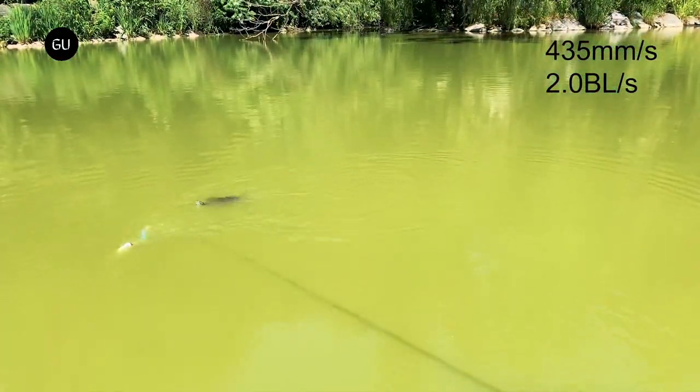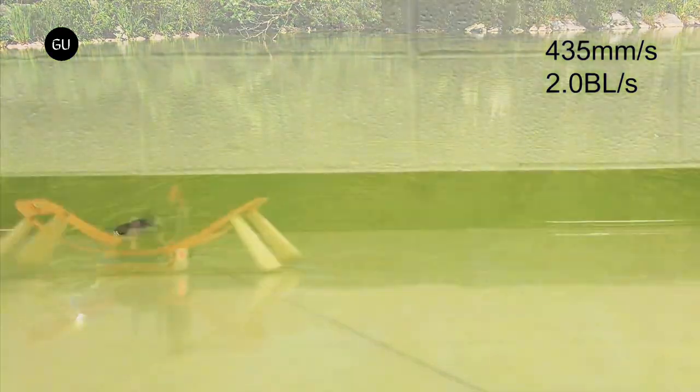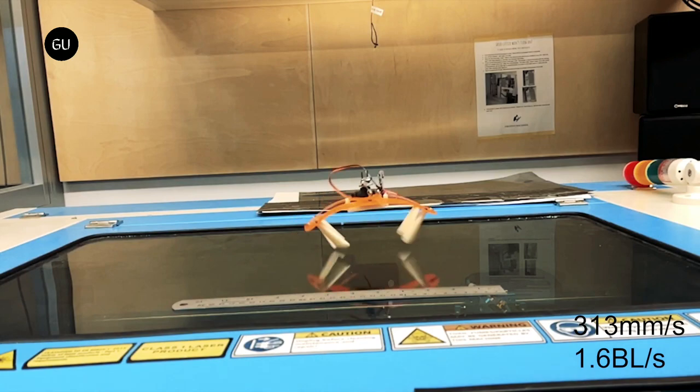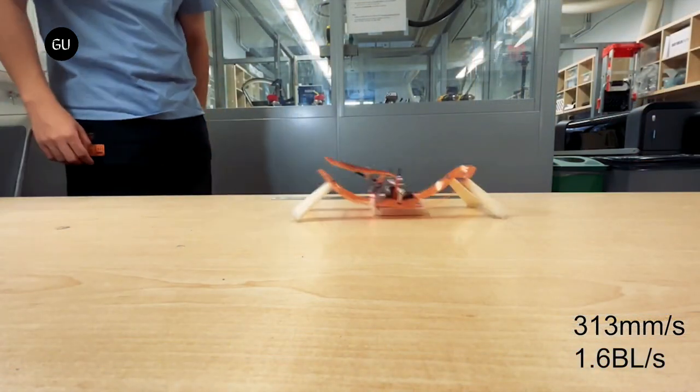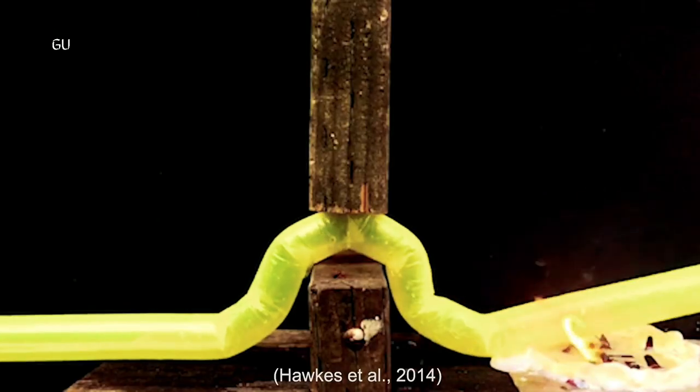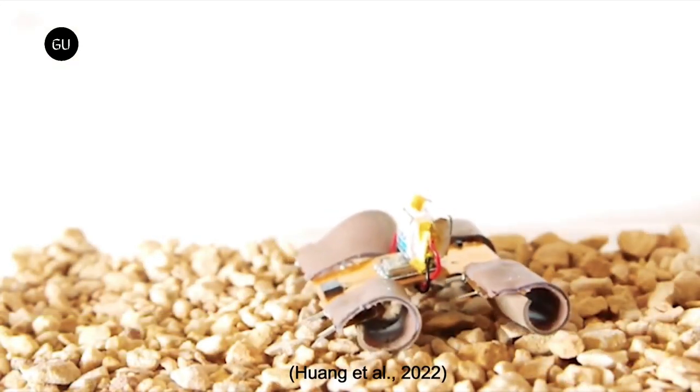The fish was able to swim at a top speed of 2.0 body lengths per second, while the quadruped topped out at 1.6 body lengths per second. According to the team, these speeds are considerably higher than those previously recorded for similar small soft-bodied robots.